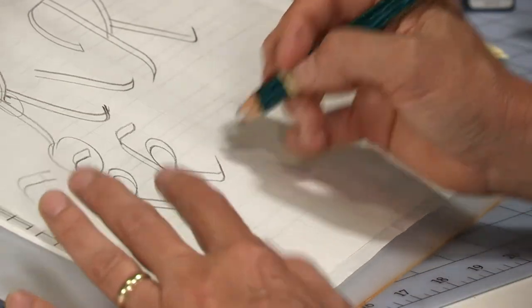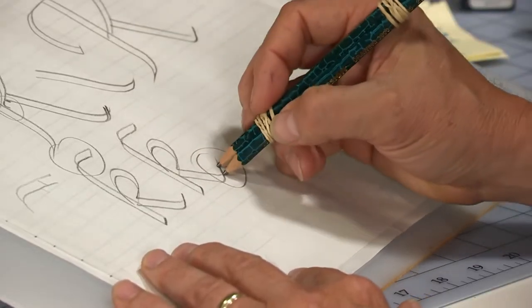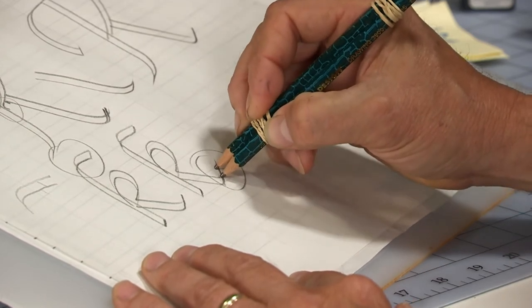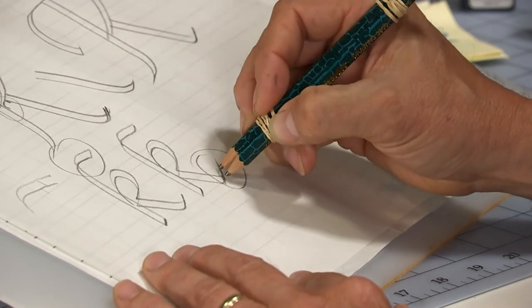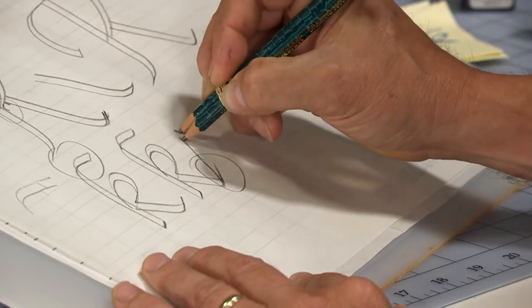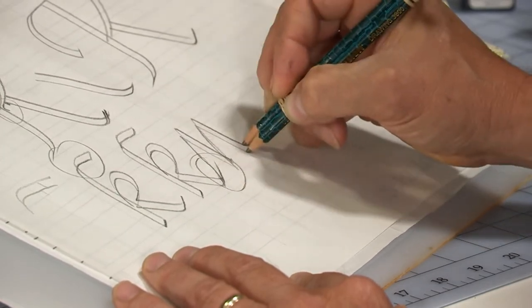Now, as you can probably guess, what happens if the letter K is connected to the next letter? You just simply make sure that this little foot is at the right angle to begin the next letter, whatever that may be. Does that make sense?